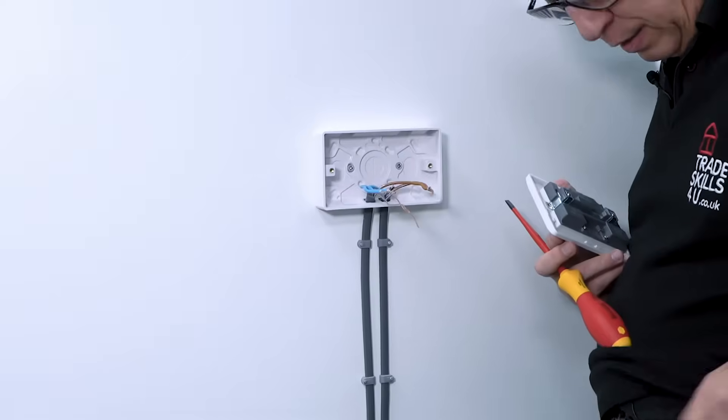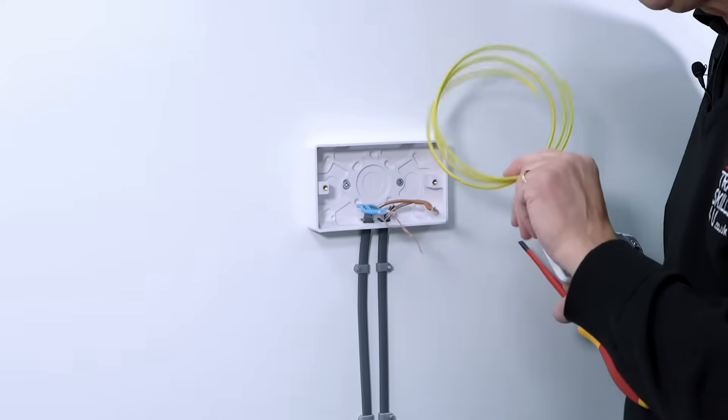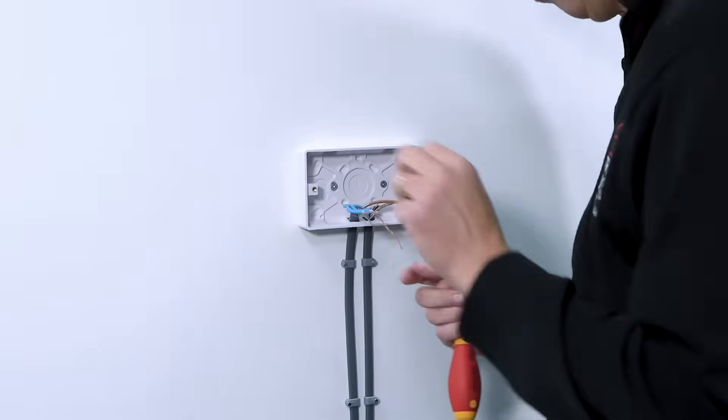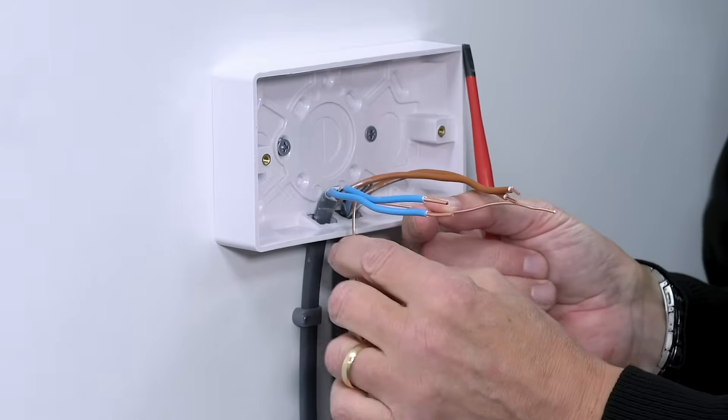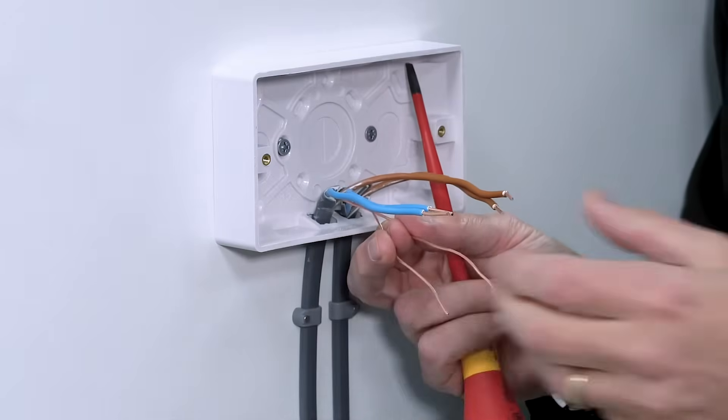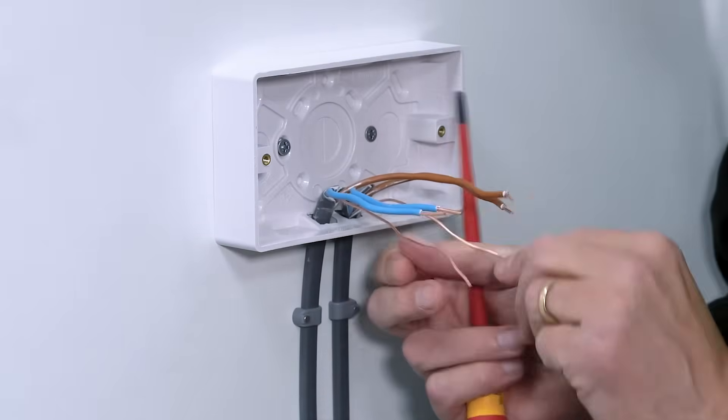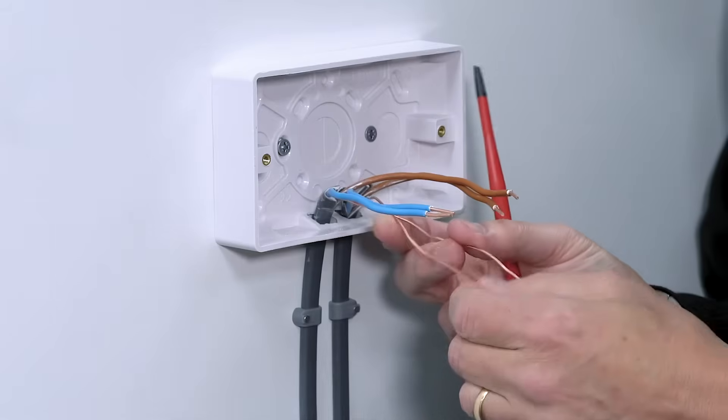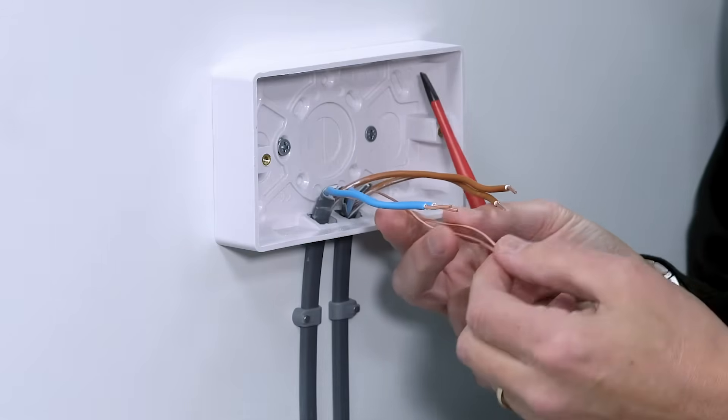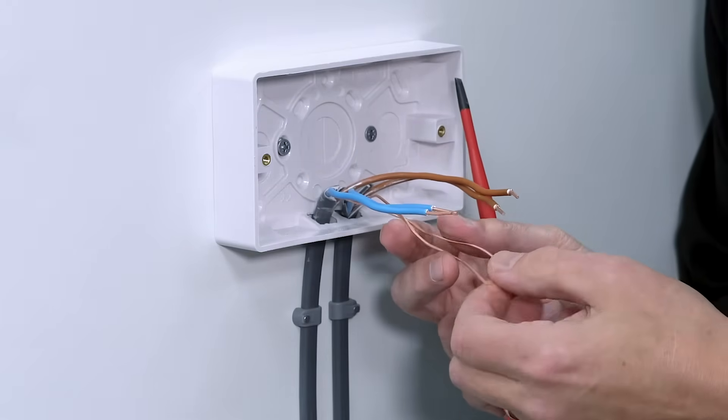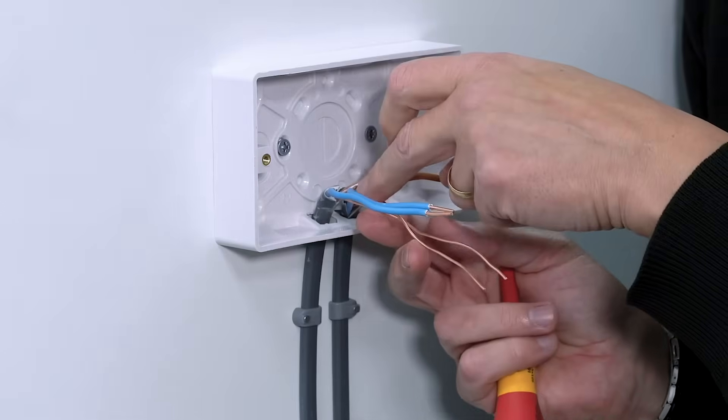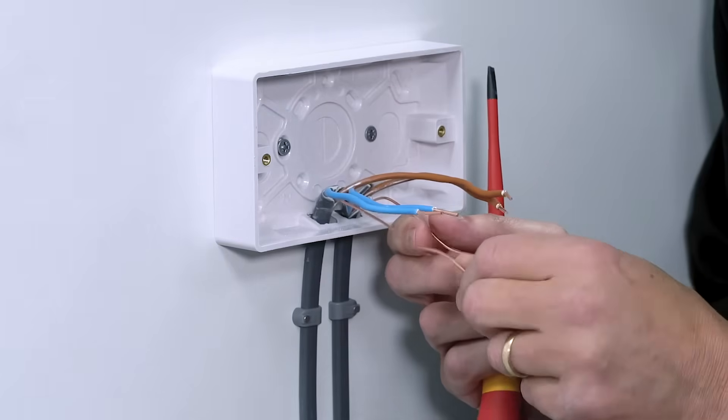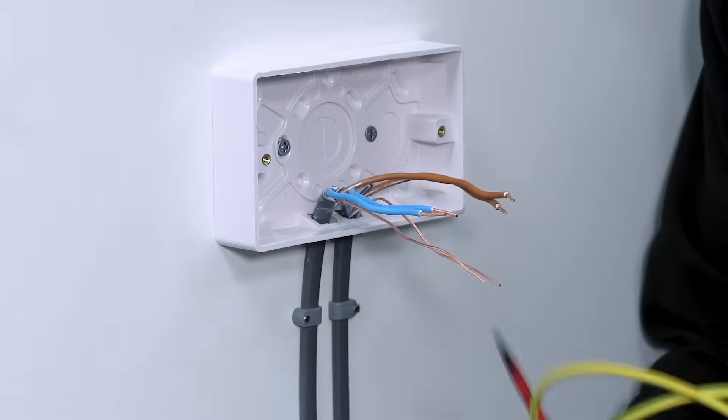I'm going to have to cover them with this green and yellow sleeving. Now students have asked me before, why can't we just twist the CPCs together and put one piece of sleeving on? Well, the problem with that is if you twist them together, then you've got a good connection of the CPCs, but in the event of a fault, if these came out of the terminal, you might not pick the fault up immediately because they've been twisted together. So the golden rule is you never twist conductors together; you always keep them separate.